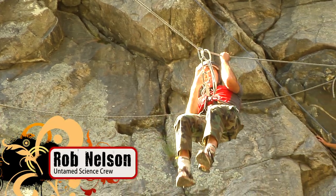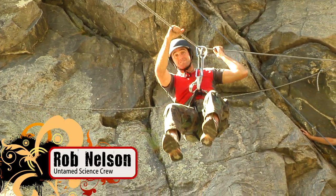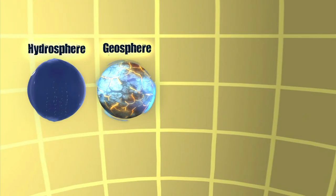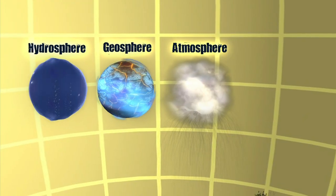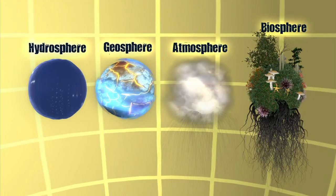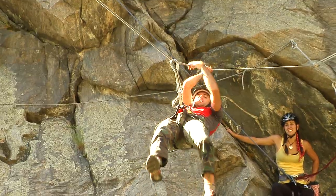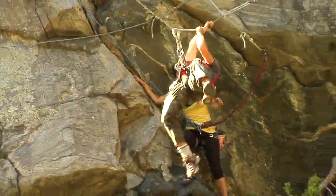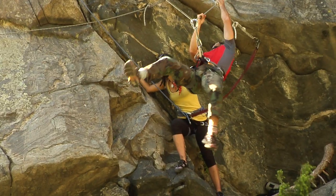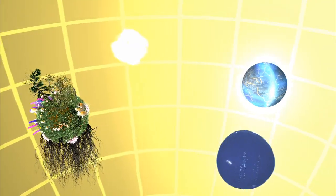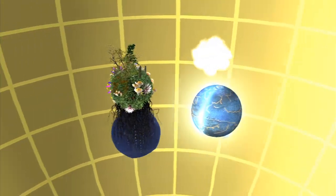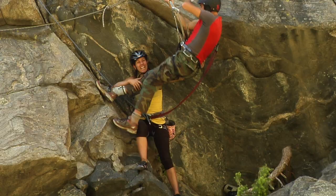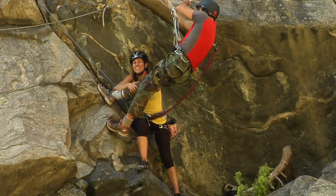Earth is a combination of four systems that we call spheres. You've got the hydrosphere, the geosphere, the atmosphere, and the biosphere. Now all of these spheres are connected in simple and complex ways. They're interdependent — that means they interact and they can affect each other. We love to explore all of the systems on Earth. So let's go explore.